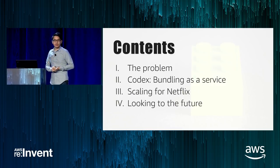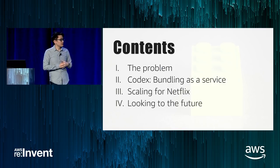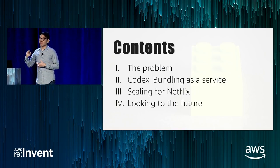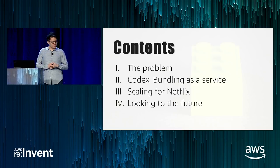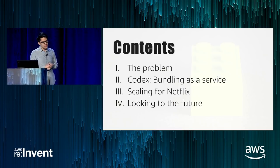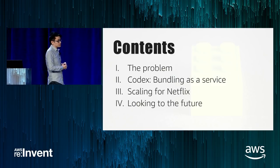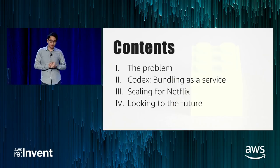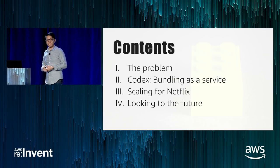The story I'm going to share with you today is going to be split into four parts. I'll start by setting the stage of the problem, then talk about how we solved it at Netflix by building a service, cover some of the scaling problems associated with that service, and finally end with some of the things that keep us up at night.